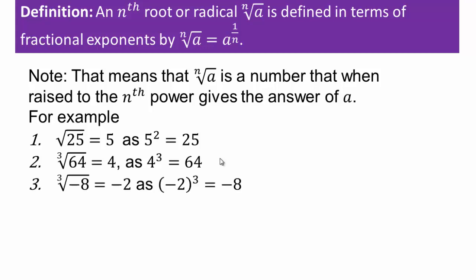Negative 8: we know that negative 2 times negative 2 times negative 2 is negative 8. So cube root of negative 8 is negative 2. Square root of 25, cube root of 64, cube root of negative 8 — make sure you know how to read these.